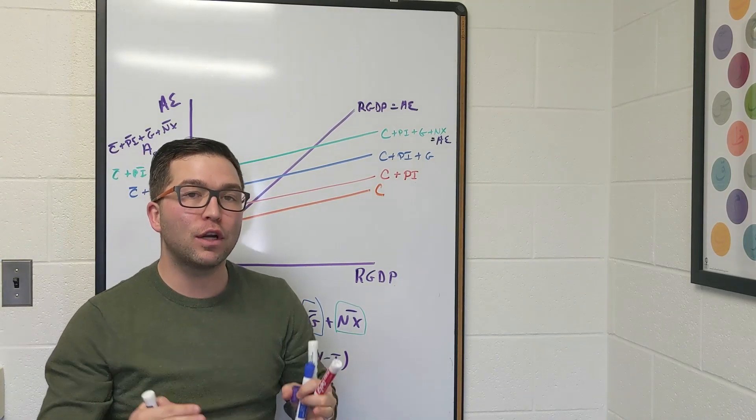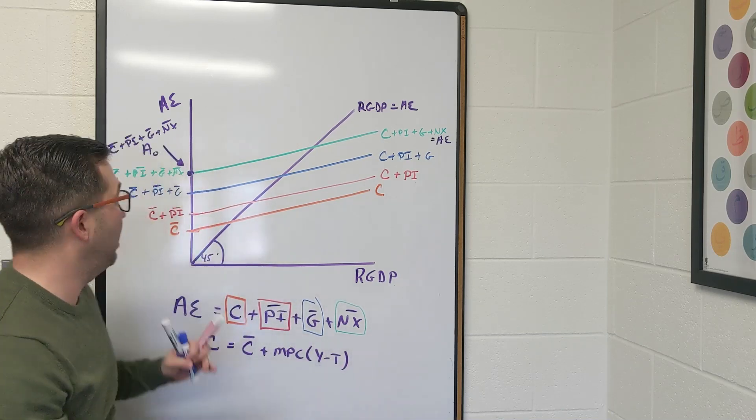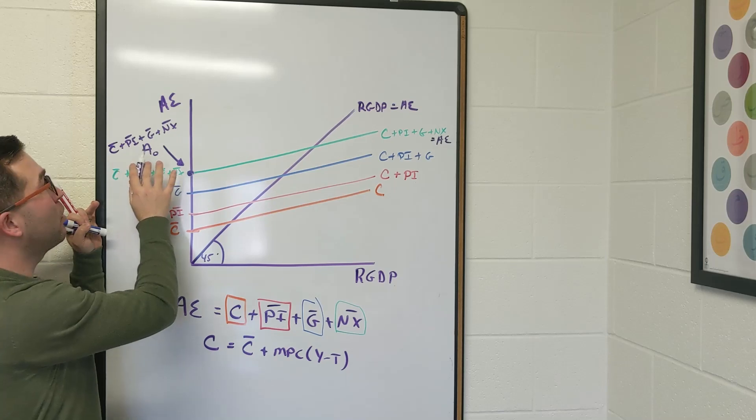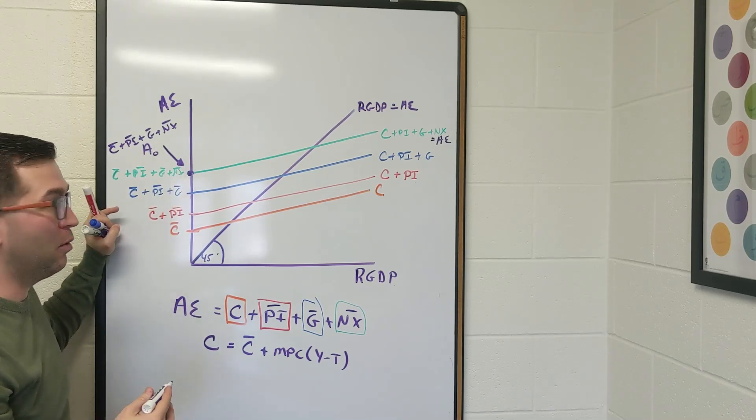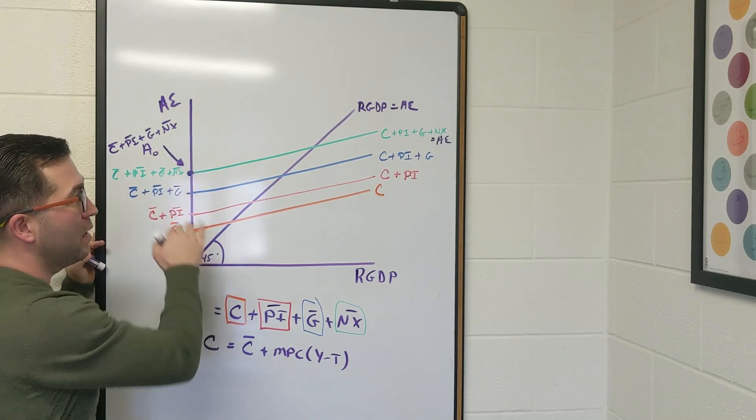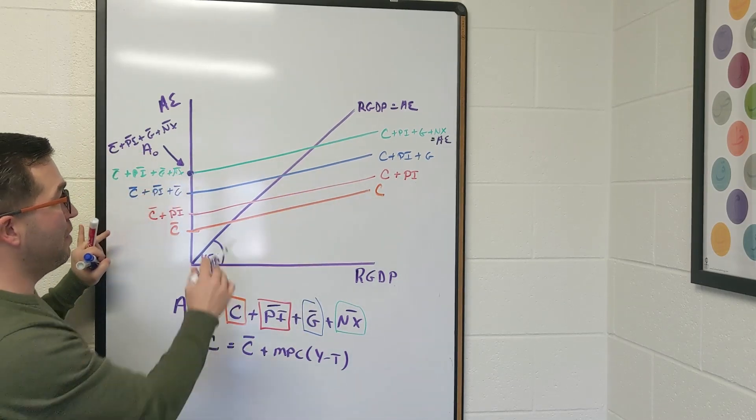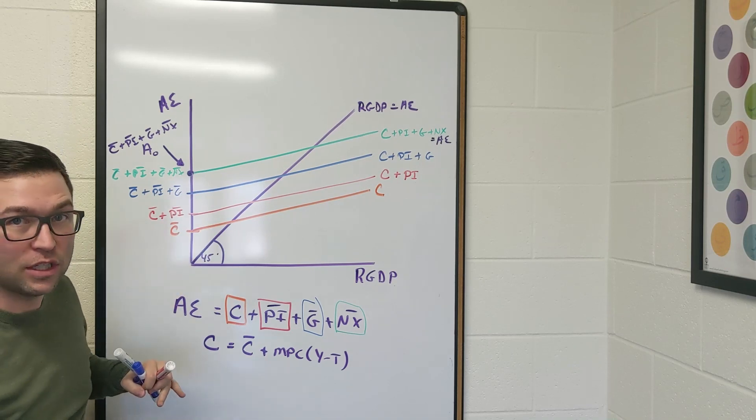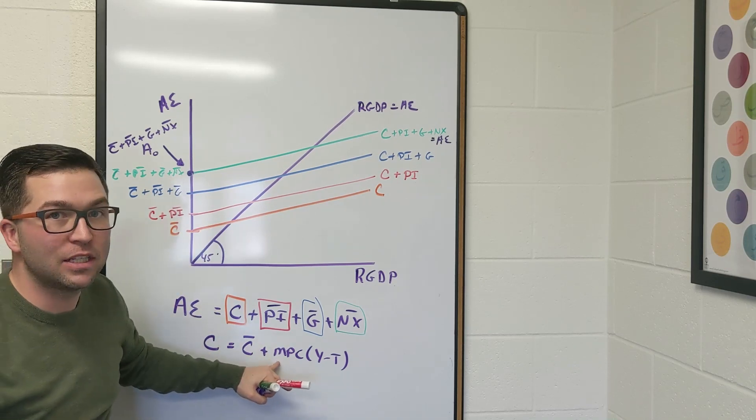We just add up all the different components of autonomous spending: autonomous consumption, autonomous investment, autonomous government purchases, and autonomous net exports. So we're going to start at that point. We're going to see it upward sloping. The slope of this line right here is going to be the same as the consumption function, which is marginal propensity to consume. So there's a ton of information here.